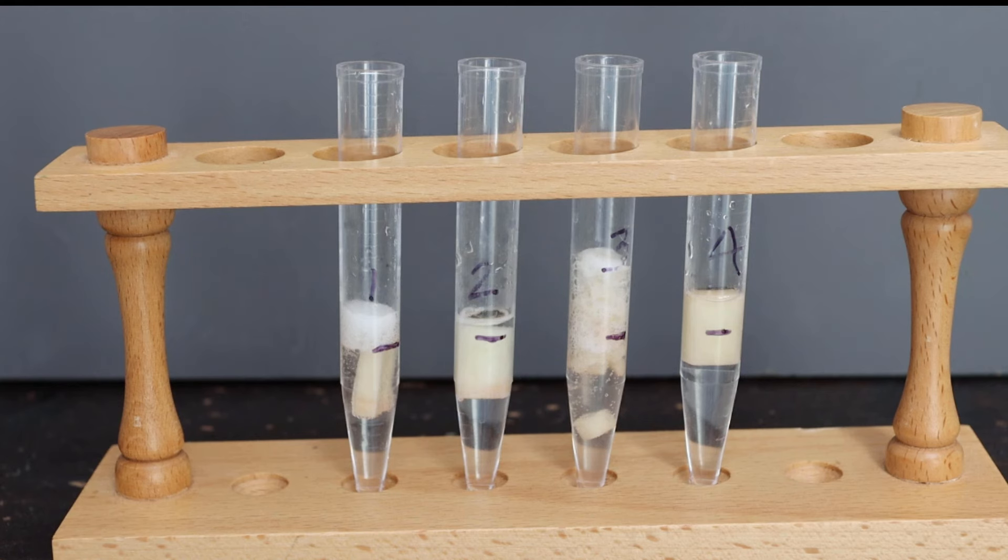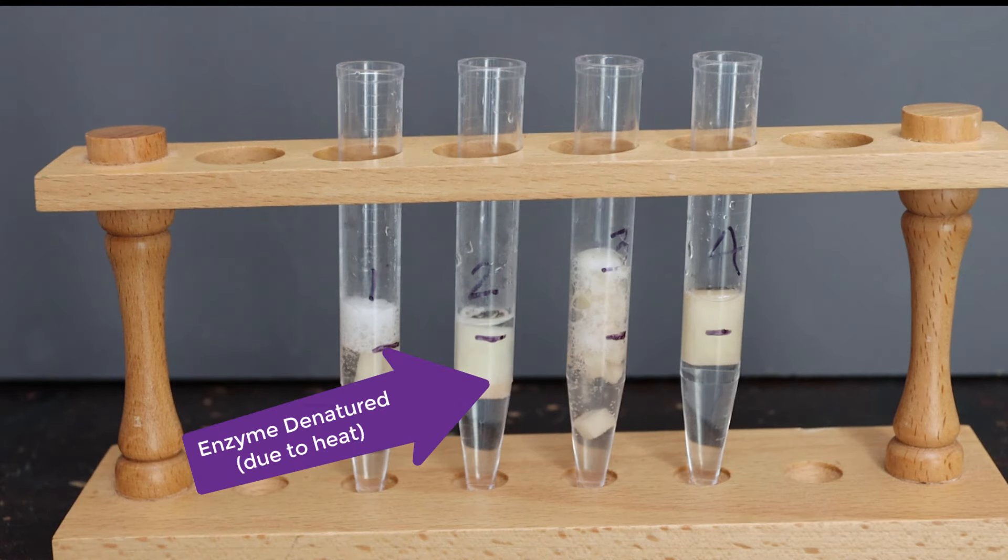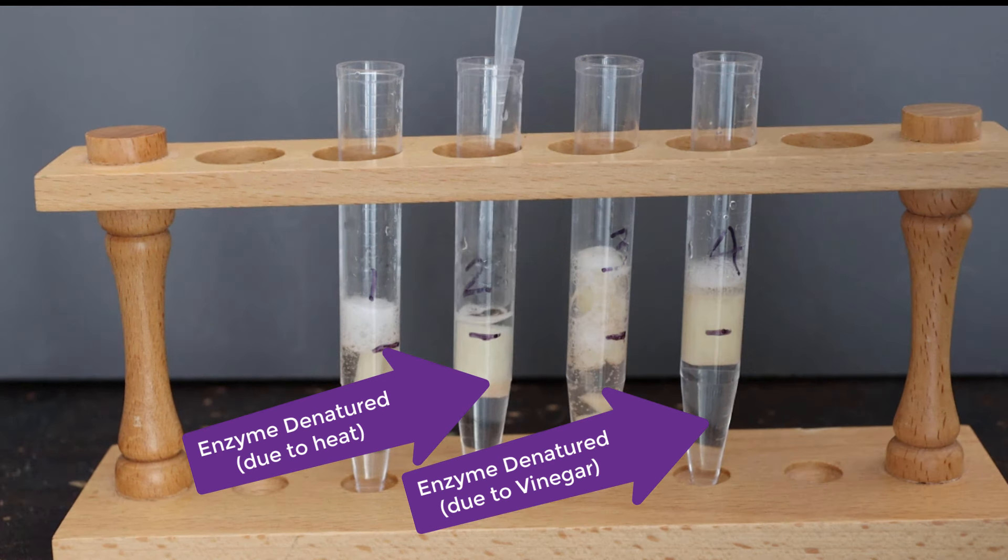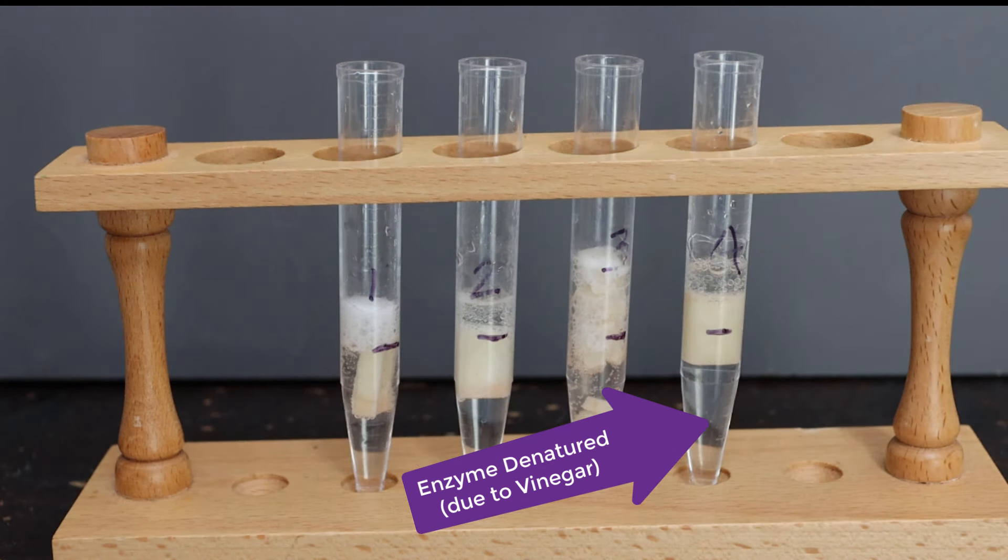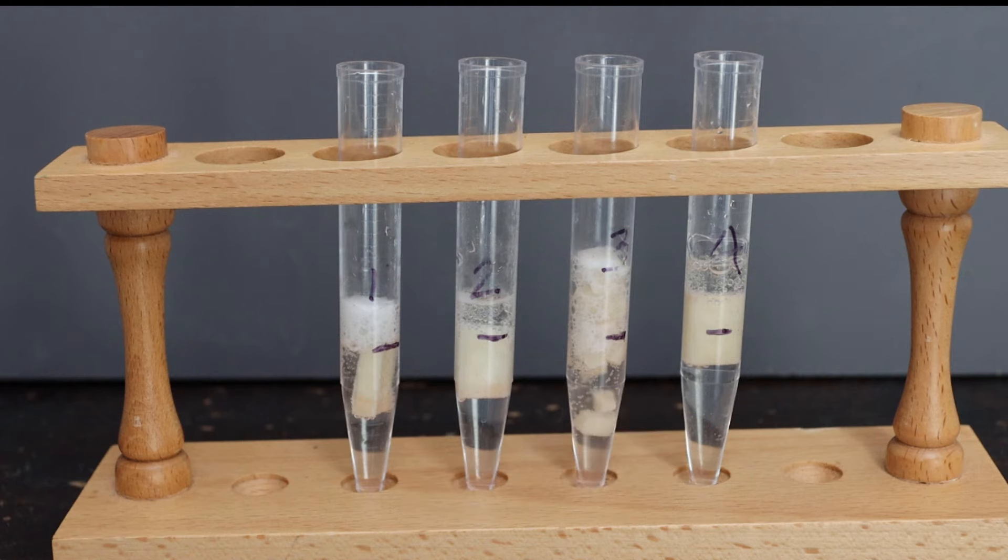So again, test tube one and test tube three give you the best results. By far, test tube three works the best. Test tube two, the enzyme's been denatured by heat, and in test tube four we've also denatured the enzyme, but chemically by adding acetic acid. So that is the catalase experiment summary.